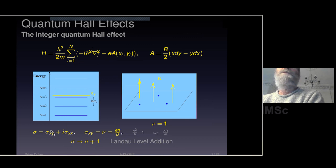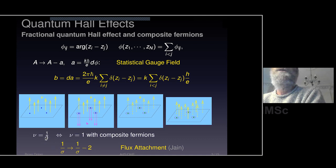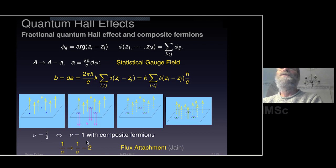In terms of complex conductivity, we take σ = σ_xy + i σ_xx. This is natural in two dimensions. Going from one Landau level to another takes σ to σ+1 in units with e²/h = 1. Flux attachment can be written as 1/σ goes to 1/σ minus 2. For example, if ν = 1/3 — so σ_xx is zero at the attractive fixed point — the conductivity is just 1/3, and 1/(1/3) = 3 goes to 3−2 = 1. So this maps ν=1/3 to ν=1 — this is called flux attachment. This is Jain's picture of the stability of the fractional quantum Hall effect.